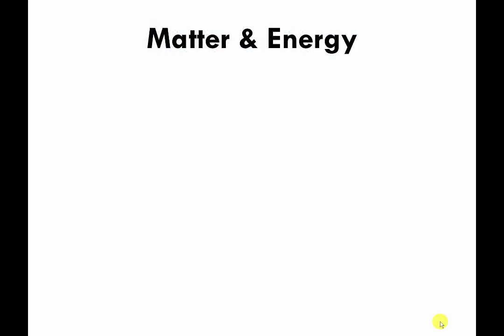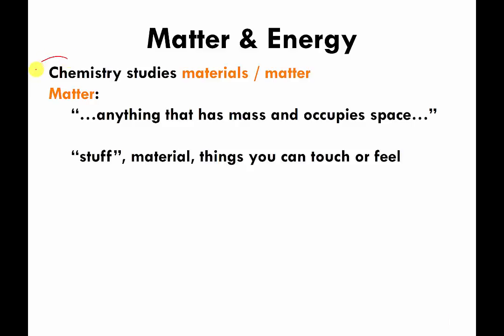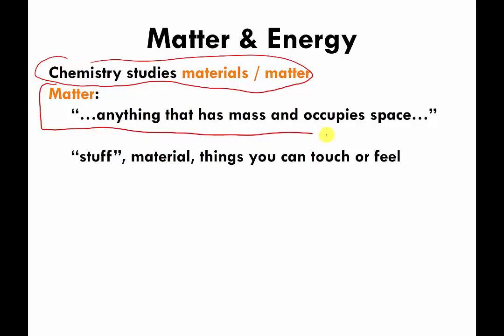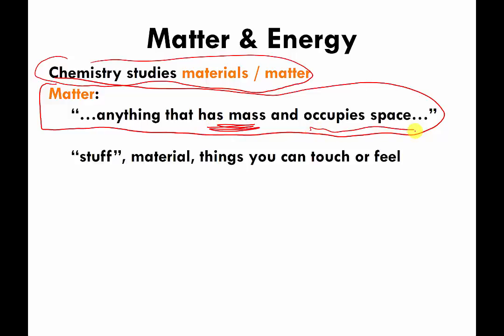This section deals with matter and energy, so we're getting closer to what you would probably consider to be real chemistry. Way back earlier I said that chemistry studies materials or material objects. A common definition for matter is anything that has mass — anything that weighs something — and takes up space. My even more informal definition is that matter is stuff, things that you can touch and feel.